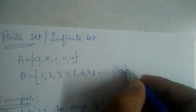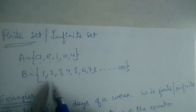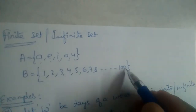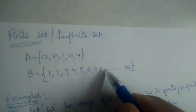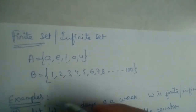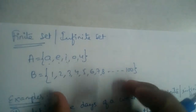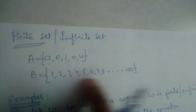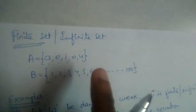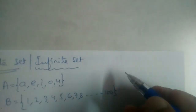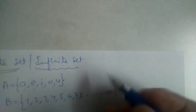Another example: let B equal {1, 2, 3, 4, 5, 6, 7, 8, ...} — natural numbers up to 100. At some point this set stops, so B is a finite set. How many elements are there? A finite number — that number is 100. So there are 100 elements and it is a finite set.